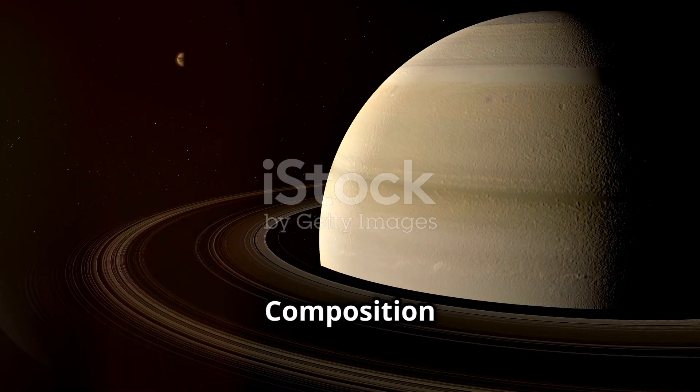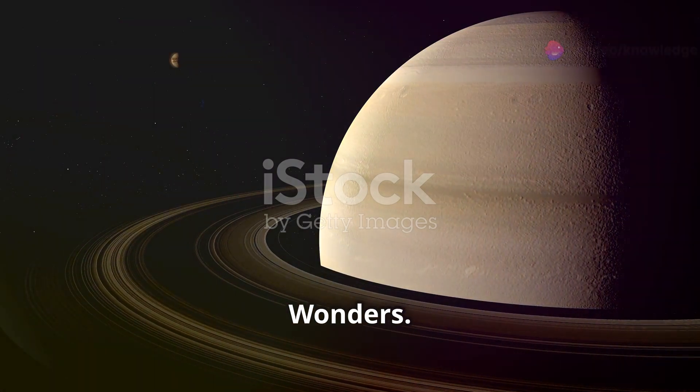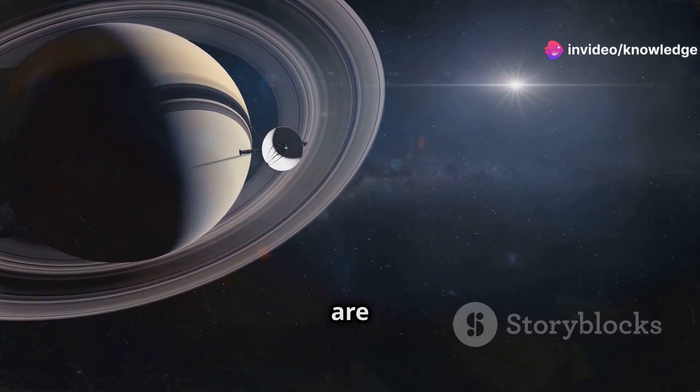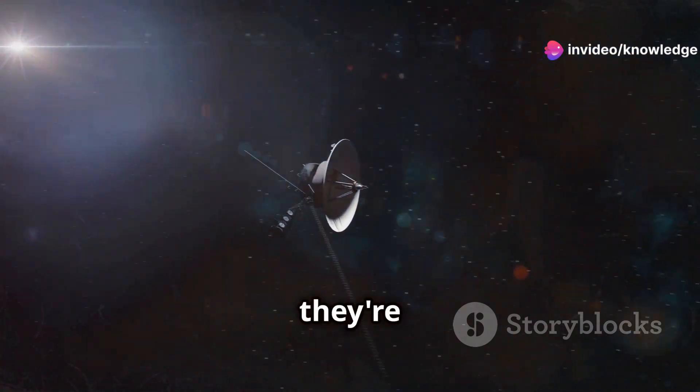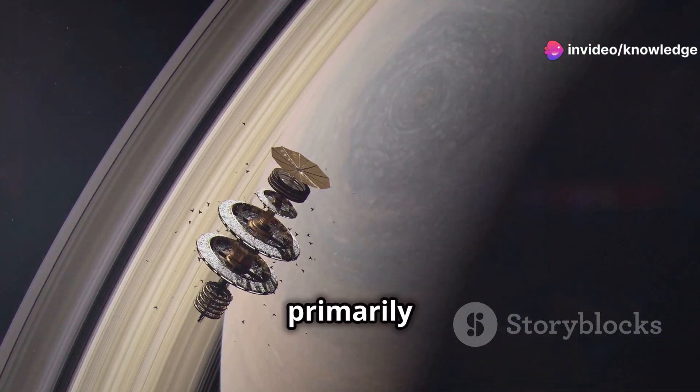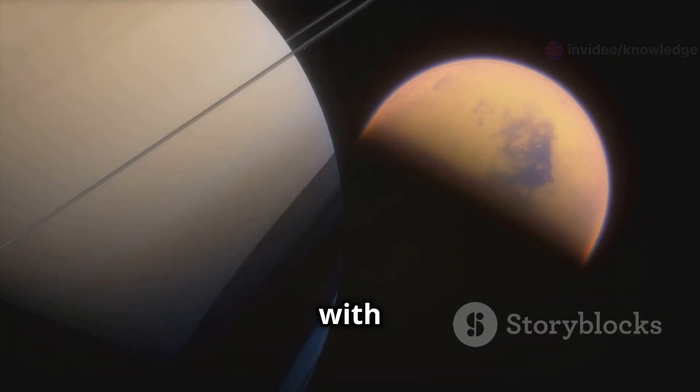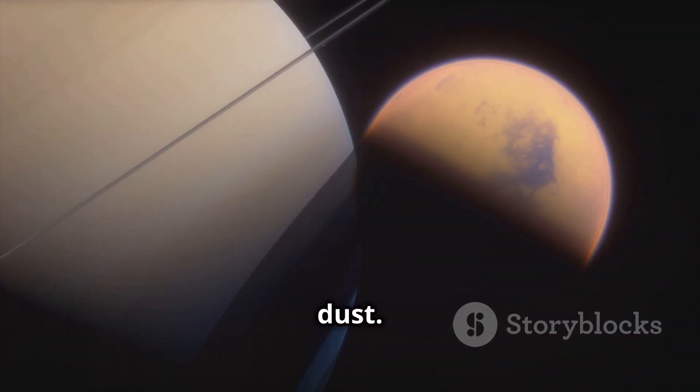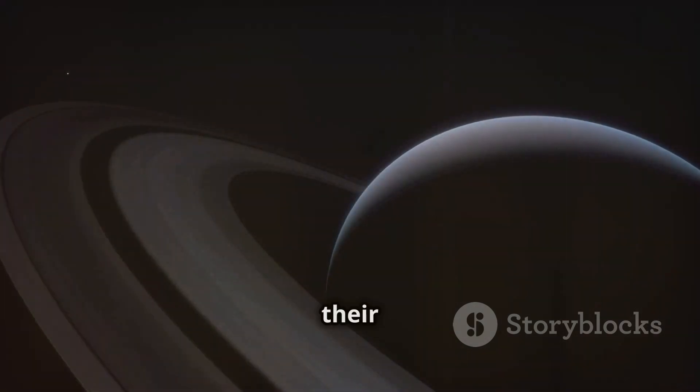Understanding why Saturn's rings are disappearing requires knowing what they're made of. The rings are primarily composed of water ice, with trace amounts of rock and dust. This composition is a clue to their origin.